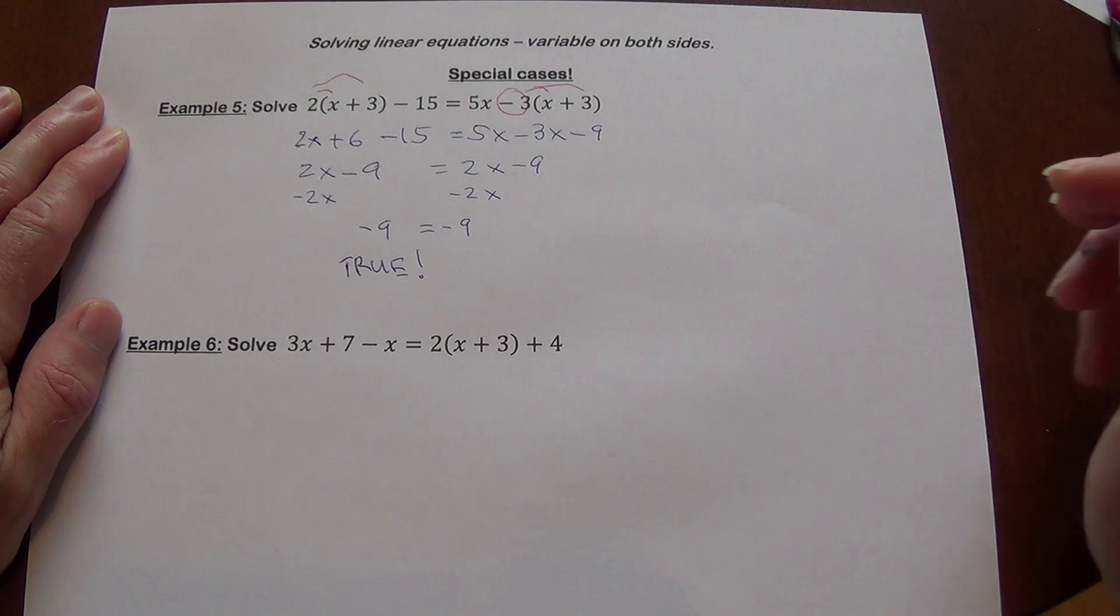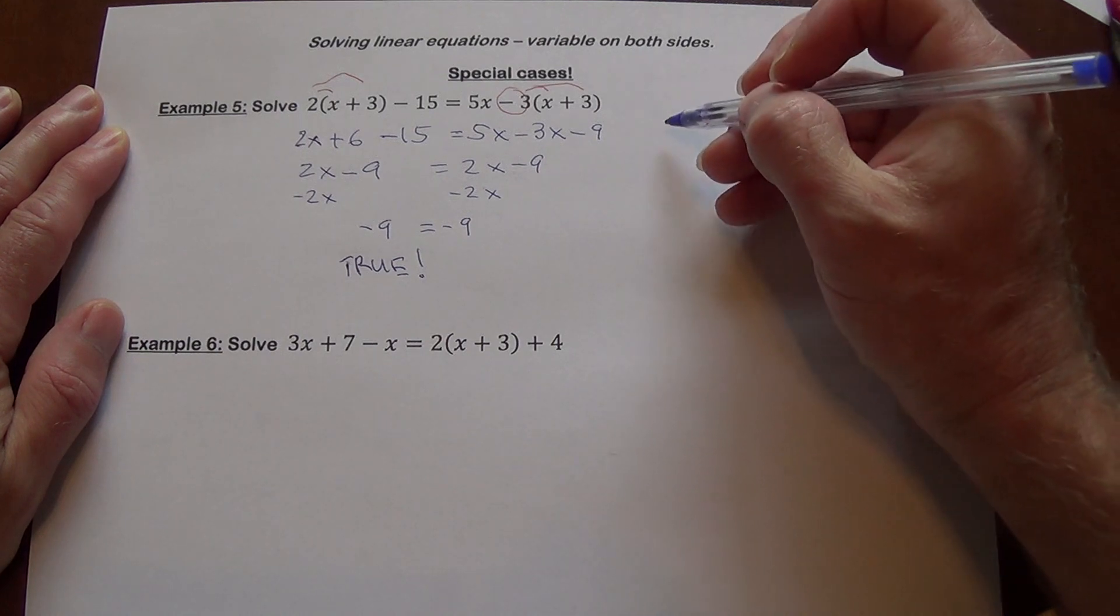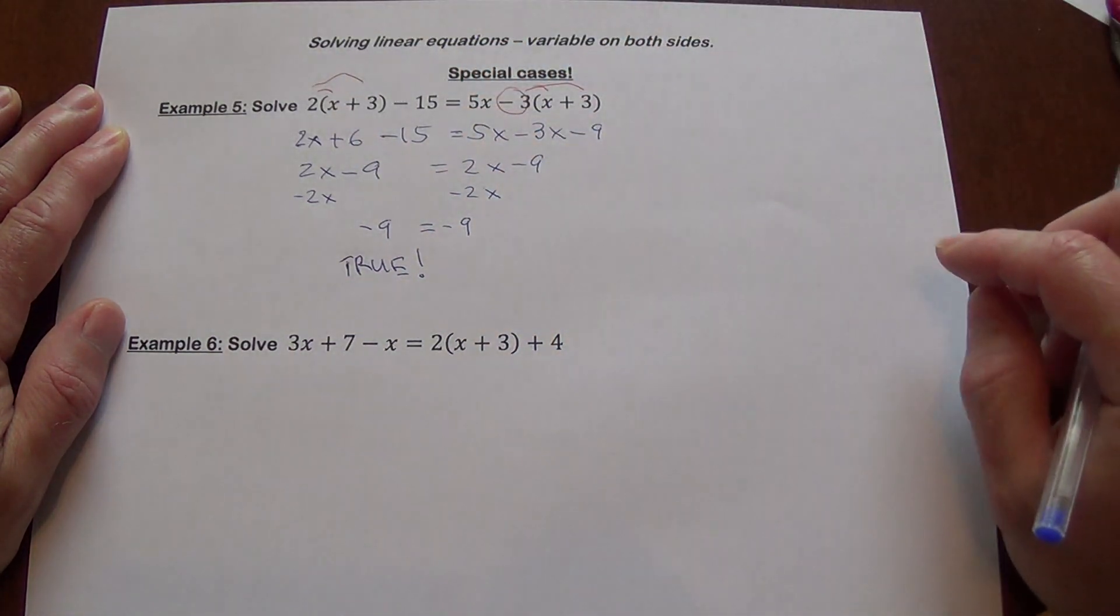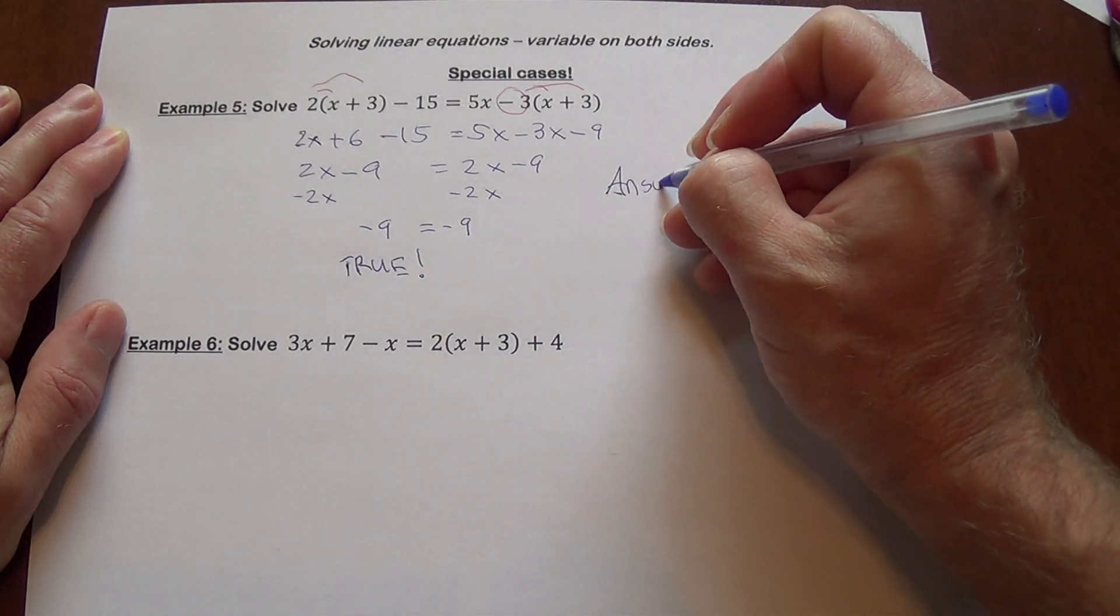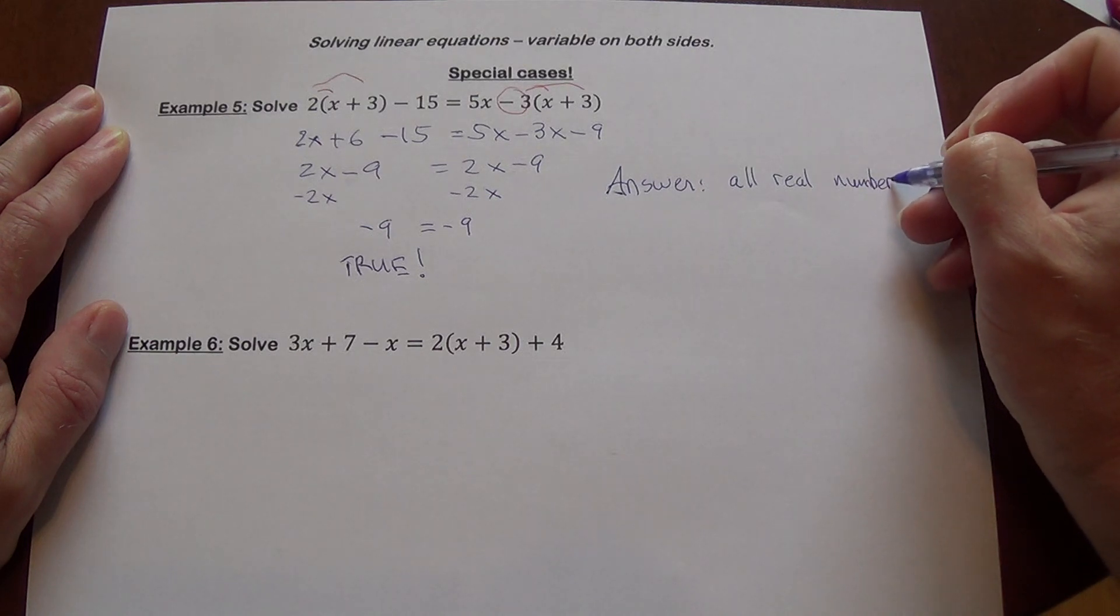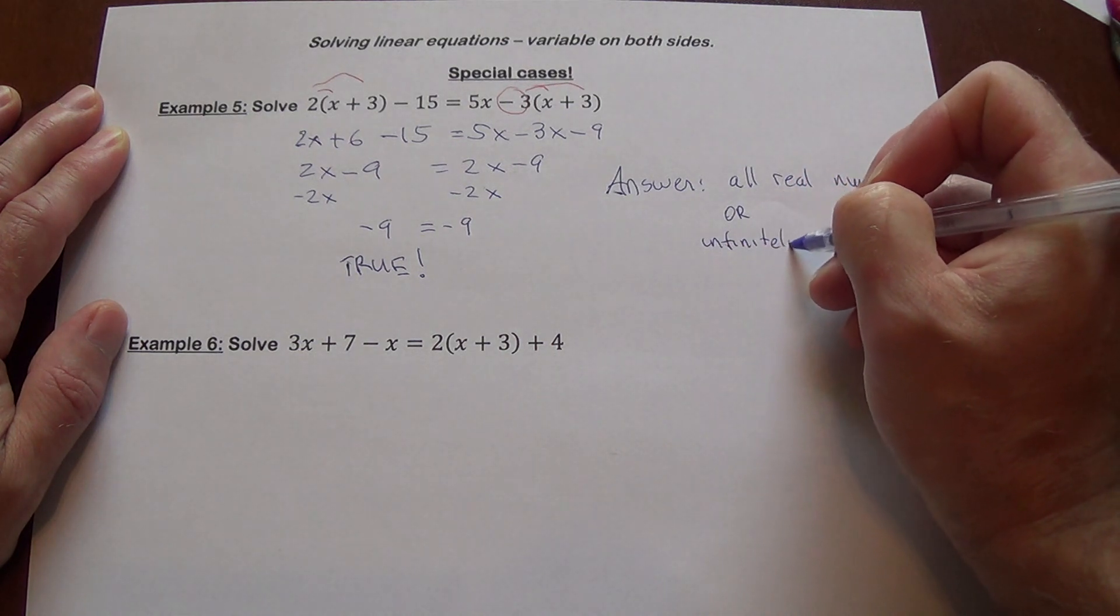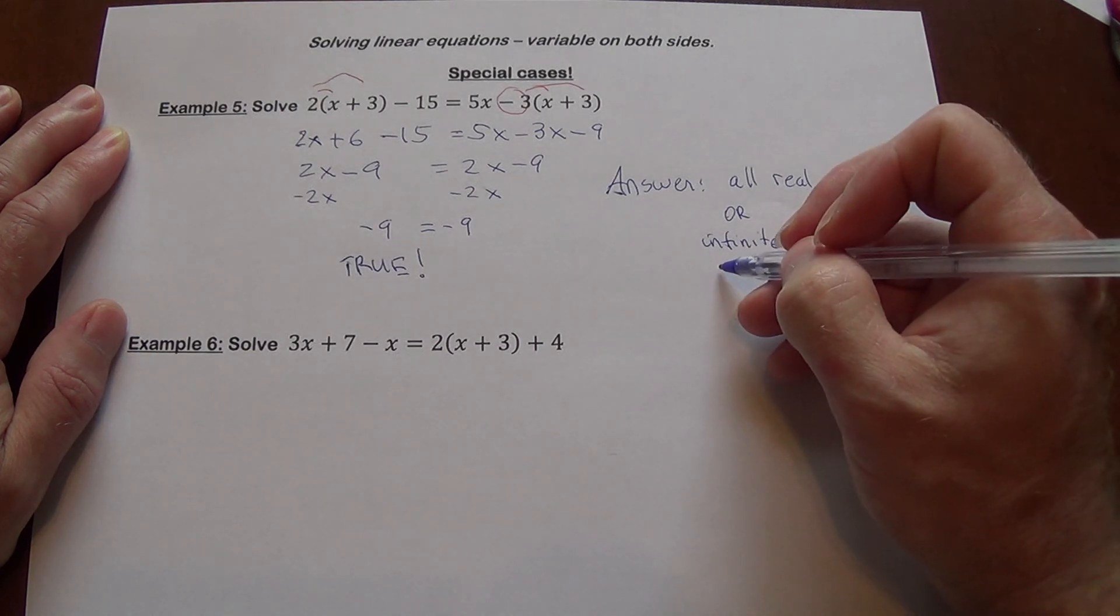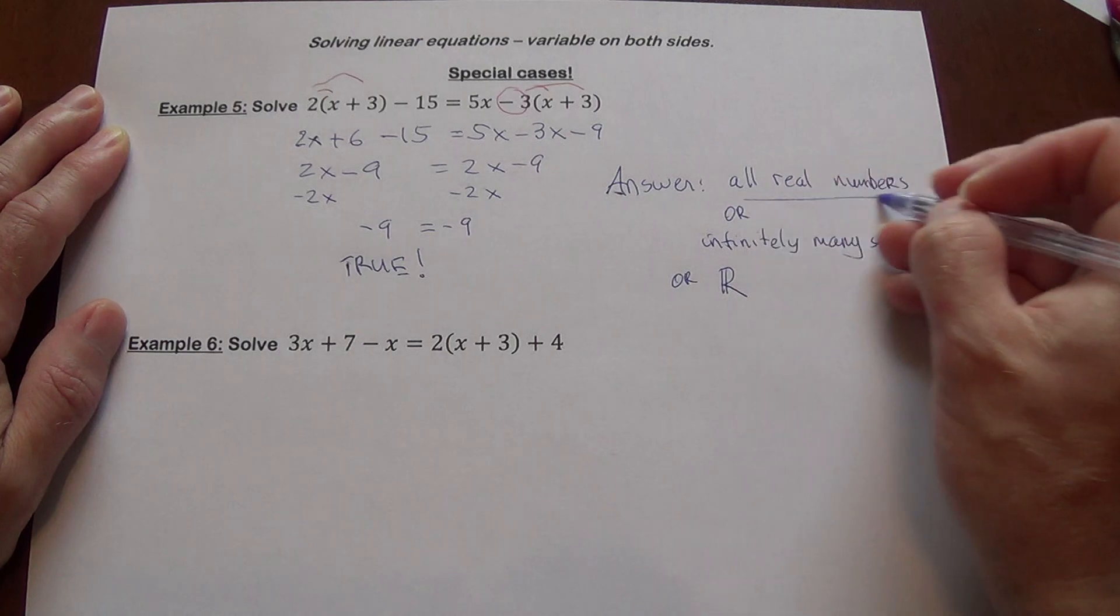And since it's a true statement, what that means, that means no matter what x is, this will always be true. It doesn't matter, you can pick any value of x, substitute it on the left side, substitute it on the right side, you will always get the same statement. So if you get a true statement here, your answer is going to be all real numbers. It is also sometimes what's referred to as infinitely many solutions. Or sometimes we write that in this form which represents all real numbers.